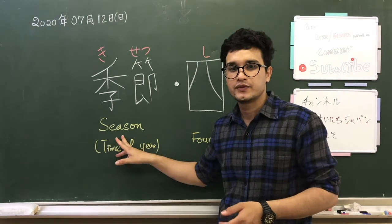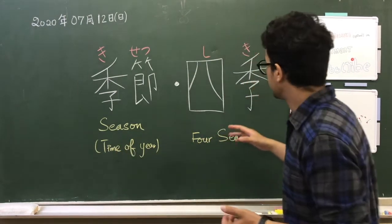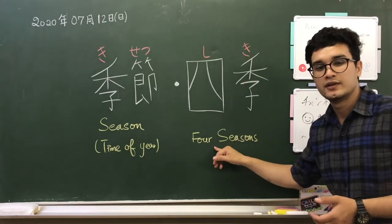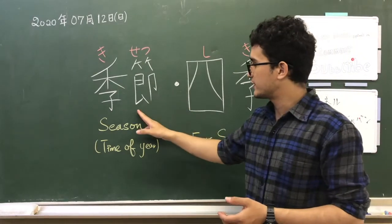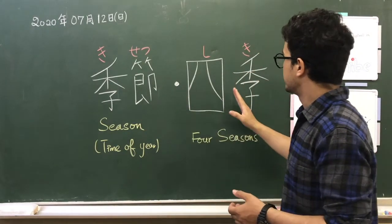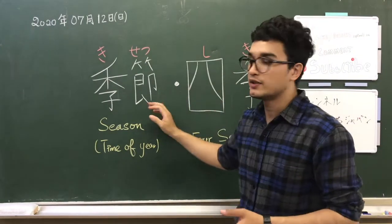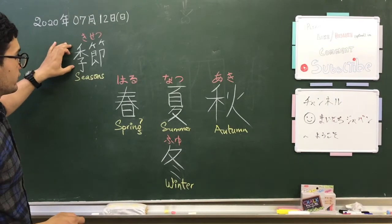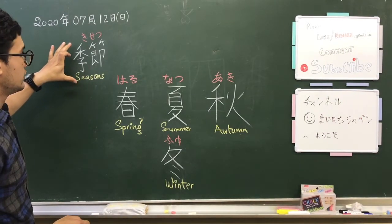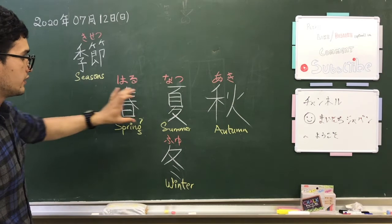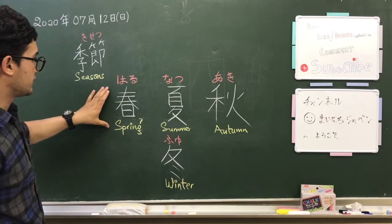Kisetsu is a season, the time of the year. Siki is the four seasons - this is the superset of Kisetsu, or Kisetsu is the subset of Siki.